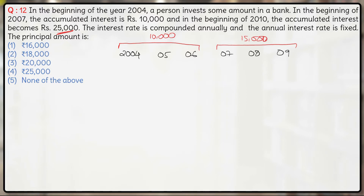Now, a very important point: if the interest for 2004 is 'a' rupees, for 2005 is 'b' rupees, and for 2006 is 'c' rupees, then the interest for 2007 will be a × (1 + r/100)³. In compound interest, interest increases by r percent every year. So if the interest for the first year (2004) is 'a', for the second year you increase by r%, for the third year by r% twice, and for the fourth year by r% thrice — giving a × (1 + r/100)³.